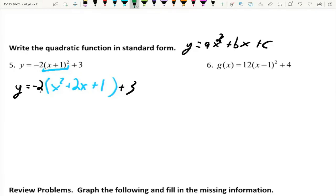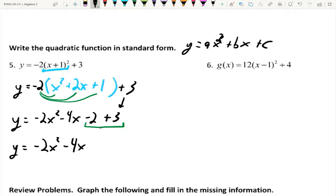Now, our second piece here is we've got to distribute the -2 across the parentheses. So, we've got y = -2 times x² is -2x², -2 times 2x is -4x, and -2 times 1 is -2, and then our +3 drops. Now, we're just going to combine our like terms on the end. y = -2x² - 4x, -2 plus 3 is +1.